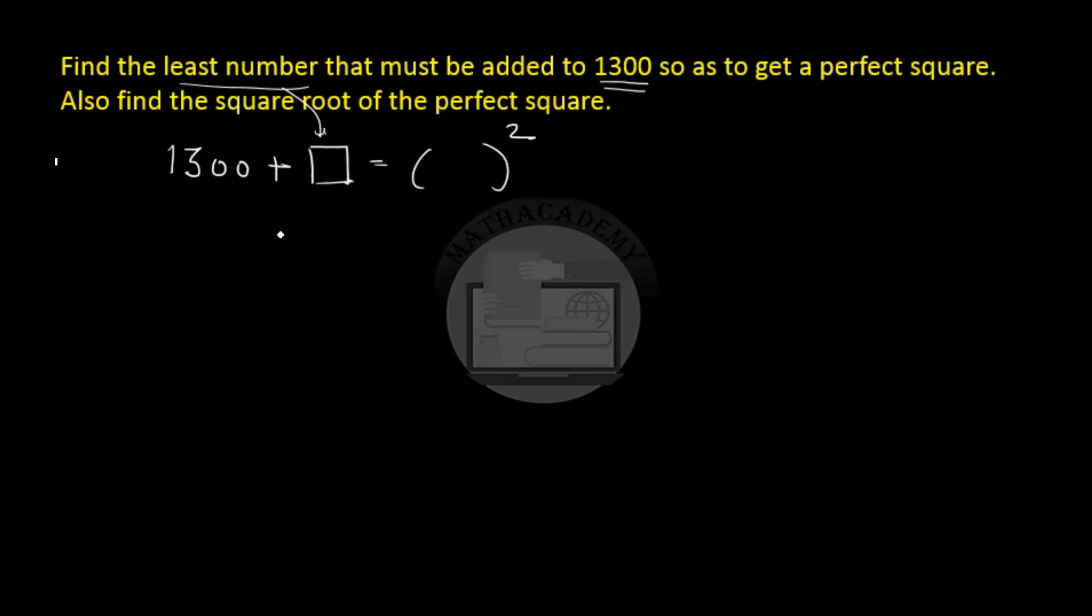How do we do this? We will try to find the square root of 1300 using the division method. So the first thing is to form the pairs starting from the ones digit and moving left. Then it is 3, 3 squared is 9 and we add a 3 here again to get a 6.